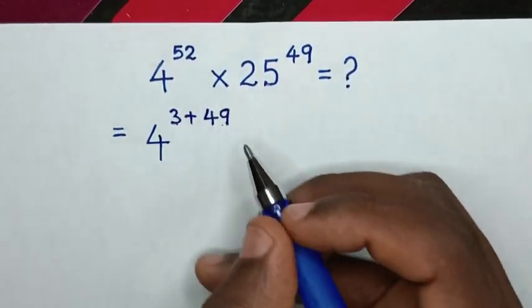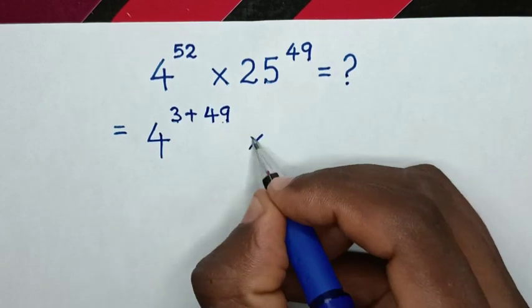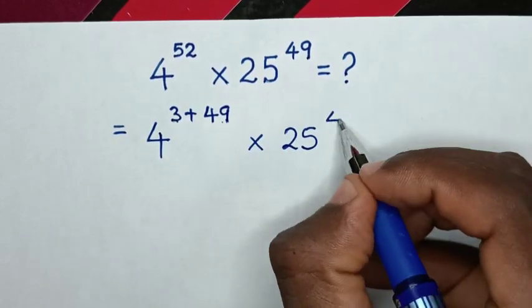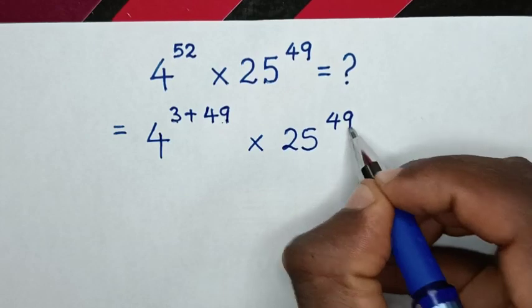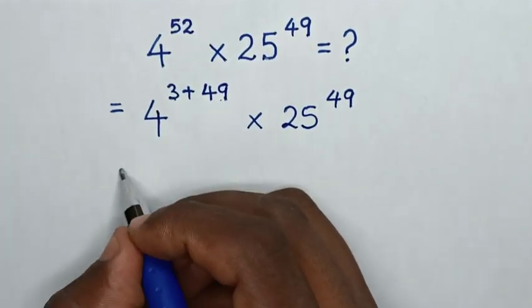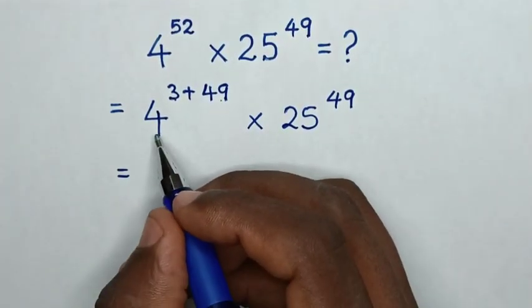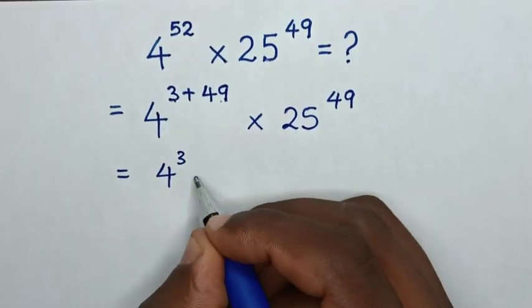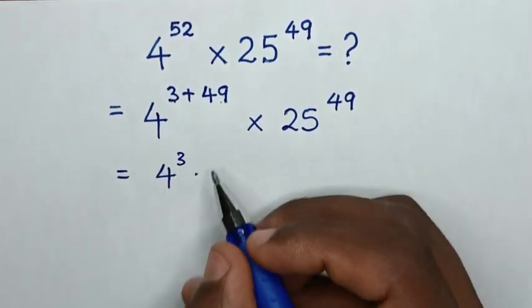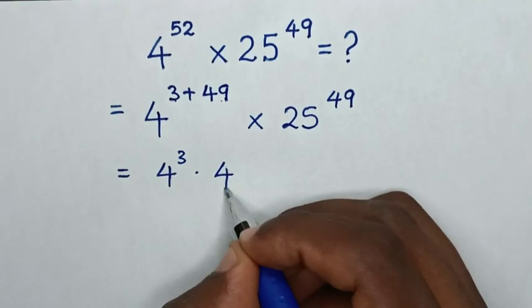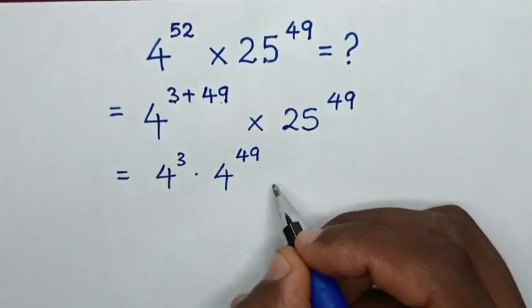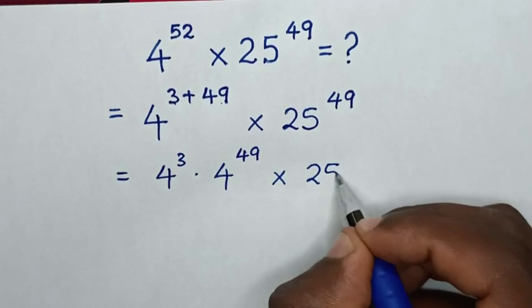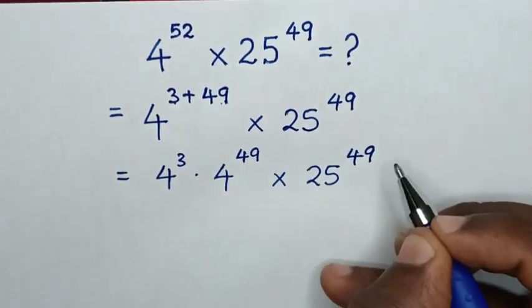So 3 plus 49 is 52. Then times 25 power of 49. In the next step, it will be equal to 4 power of 3, then times 4 power of 49, then times 25 power of 49.